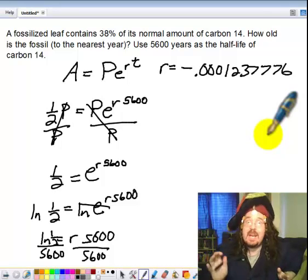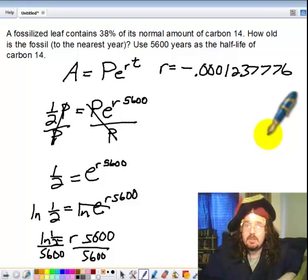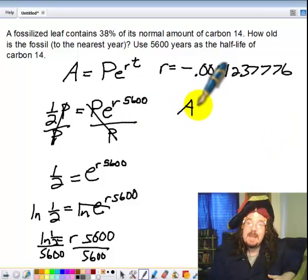I take my final amount of carbon-14, and my initial amount of carbon-14, and I plug in the rate to this formula. So I'm using A=Pe^(rt) again.